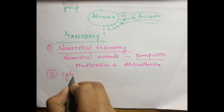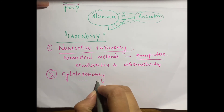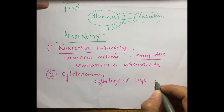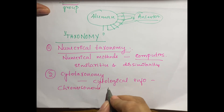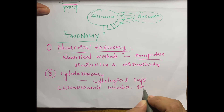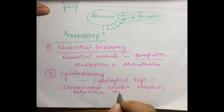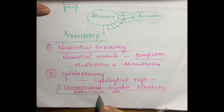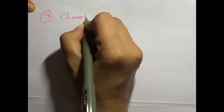The next method is Cytotaxonomy. This is mainly based on cytological information, which mainly includes the chromosome number, structure, behavior, and so on. So based on chromosome number, structure, and behavior, cytotaxonomy is applied.